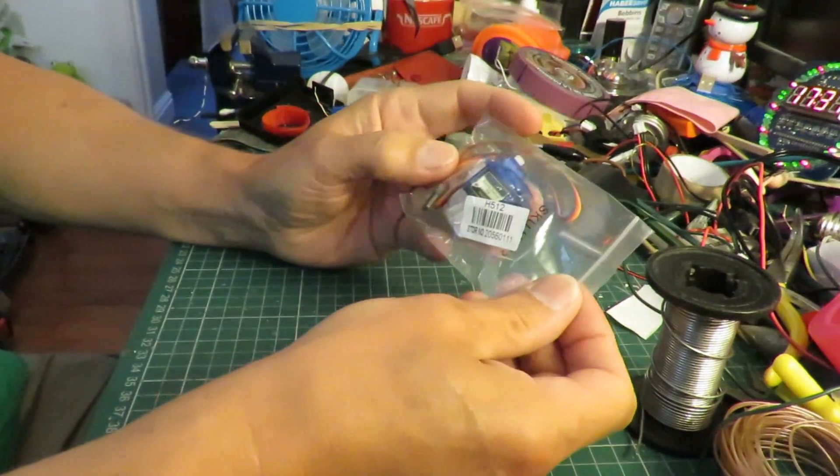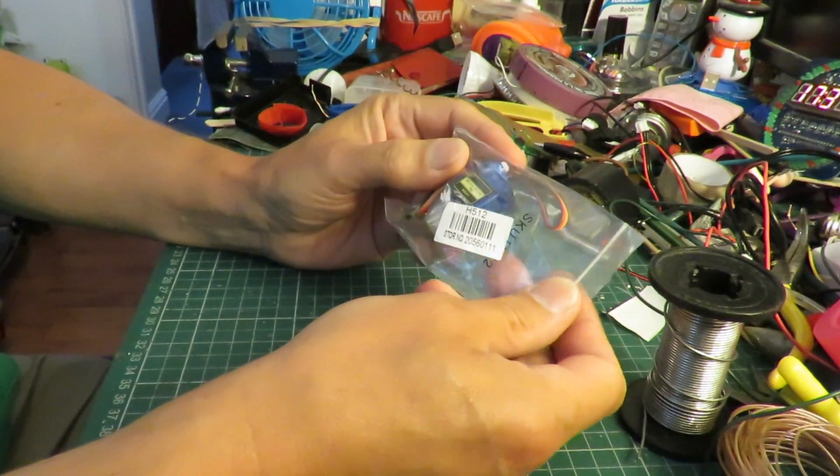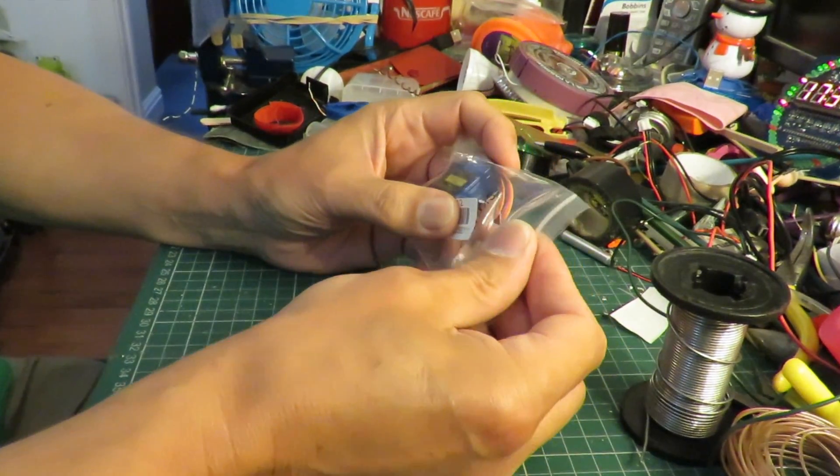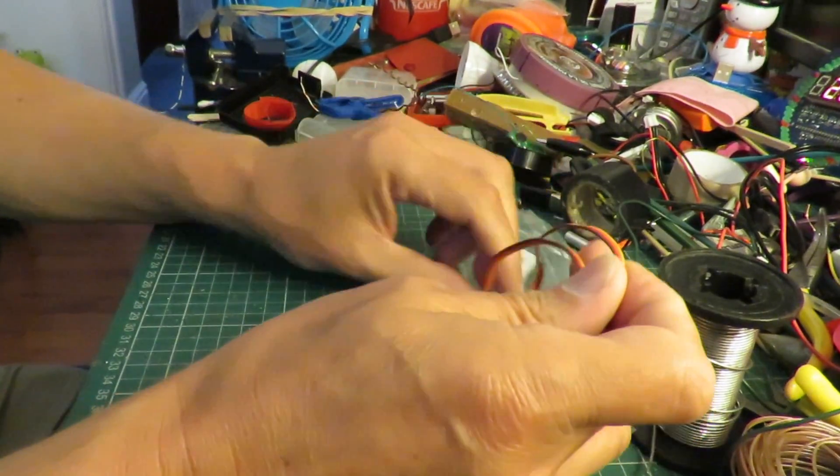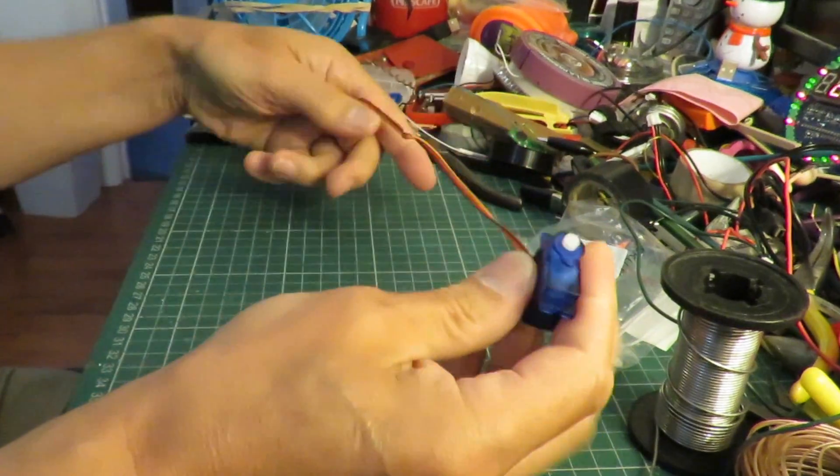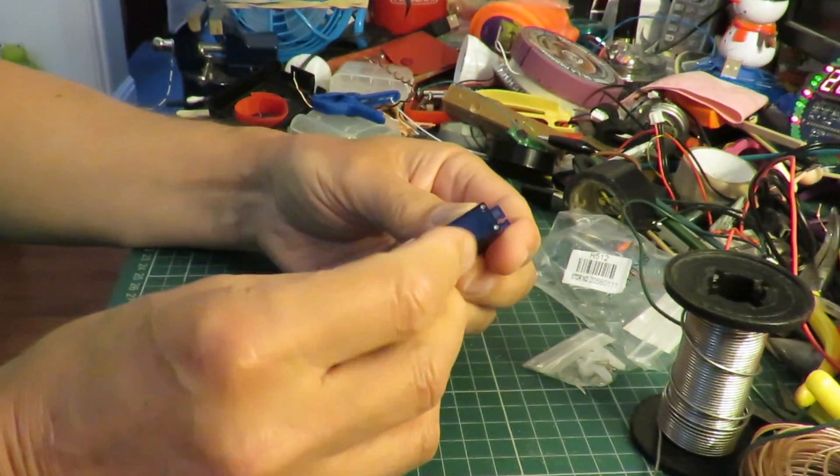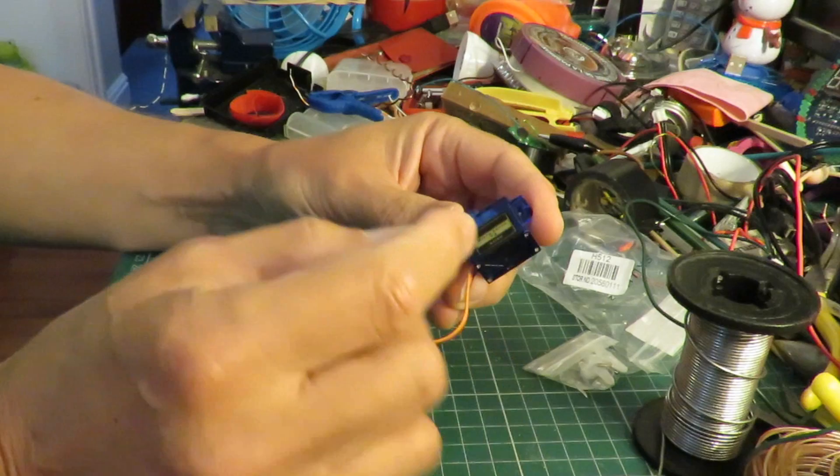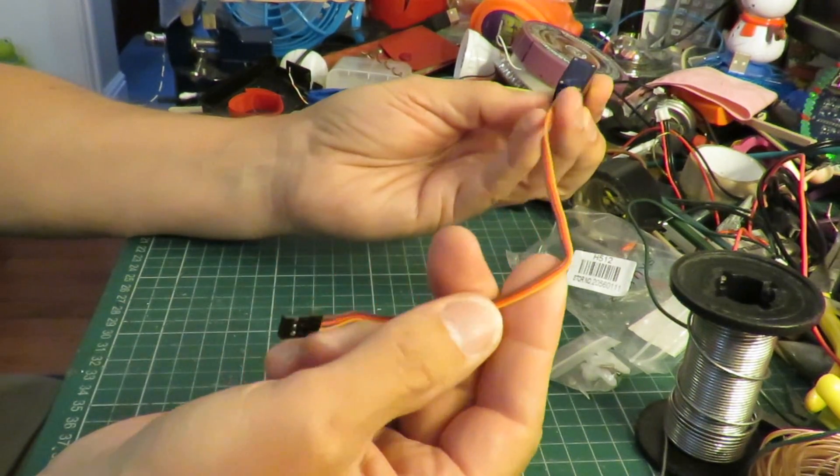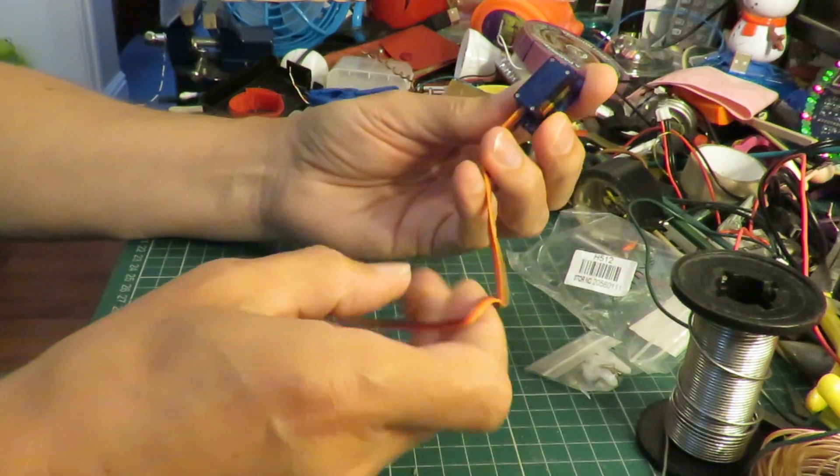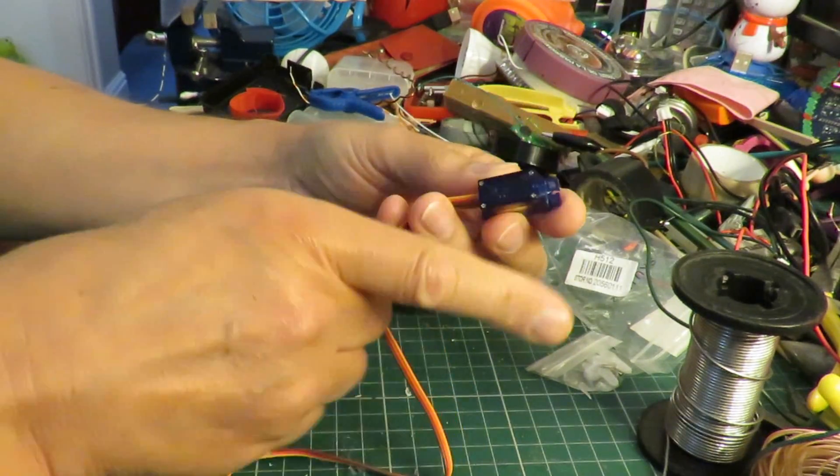So get these for about just over a pound if you buy them in reasonable bulk, sort of 10 for 11 pounds or something like that. So what we need to do is take it apart, there's four screws in the bottom, there's a circuit board in there that we don't need which converts the normal data signal to how far round it needs to turn.